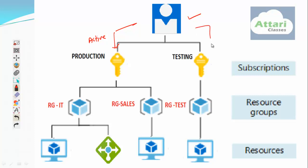You can create multiple subscriptions. For example, you want to keep your production servers different and your testing servers different — then you can create multiple subscriptions in your account. Your subscription is the house of all the services you create. Whatever server you create, the bill will come — for example, if you use a server for one hour, you will be charged. It's a pay-as-you-go model, and that amount will come as a bill at the subscription level.